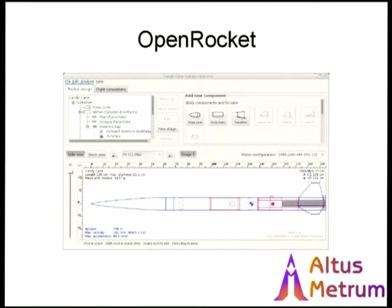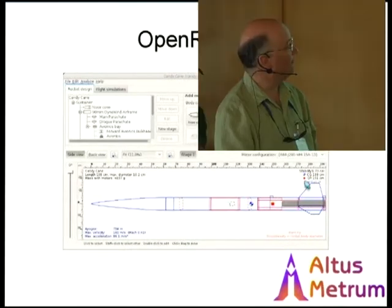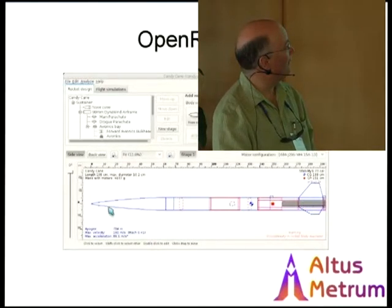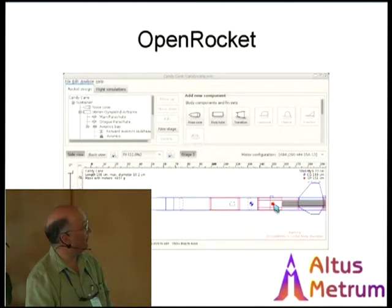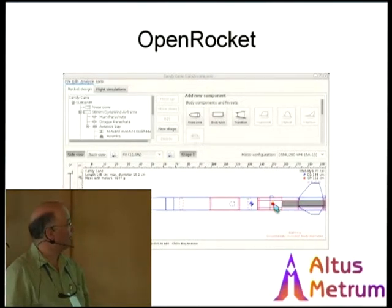Here's an example of OpenRocket. You can add components to your rocket in a hierarchical structure and see a picture of the rocket. It tells you where the center of gravity is by estimating the mass of all the components, and it tells you where the center of pressure is — how much air resistance is acting and where the center of that is. As long as your center of gravity is forward of your center of pressure, the rocket will go straight. It also knows the thrust curve for many commercial motors, or you can put your own thrust curve in, and it will estimate how fast the rocket will go, how high it will go, and whether it will come apart — which is always good to know.